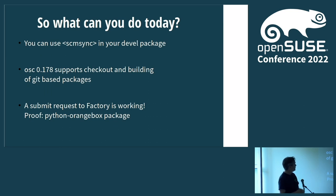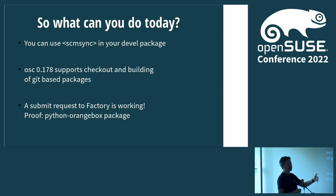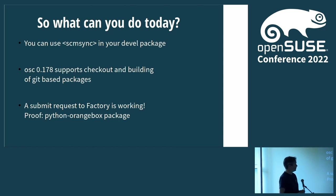OSC 0.178 was released yesterday or two days ago — you unlikely have it already. However, with that version, when you have such a package, you can check it out: you don't get an OSC checkout, you get a git clone in the end. You can go inside, work with all your Git tooling, and run osc build inside. It's not perfect — OSC still puts some .osc files inside that you don't want in your Git, so you'll most likely want a .gitignore file for that. But you can check it out, build locally, commit, push, OBS can then build the package, and you can even submit it to Factory.